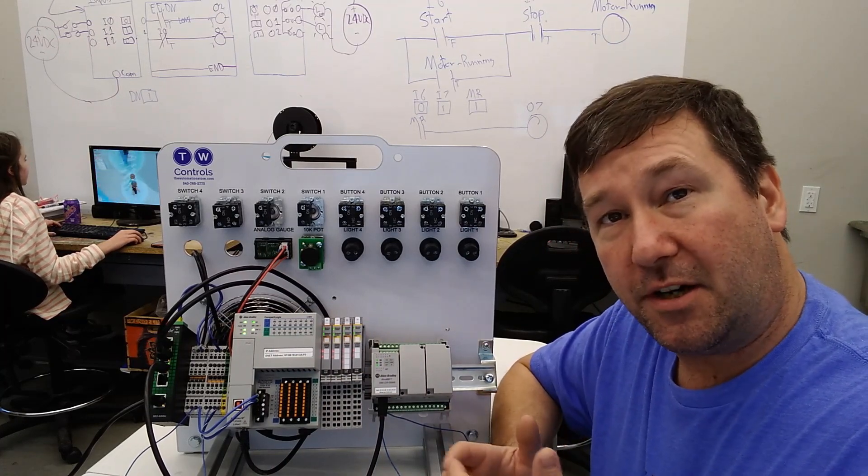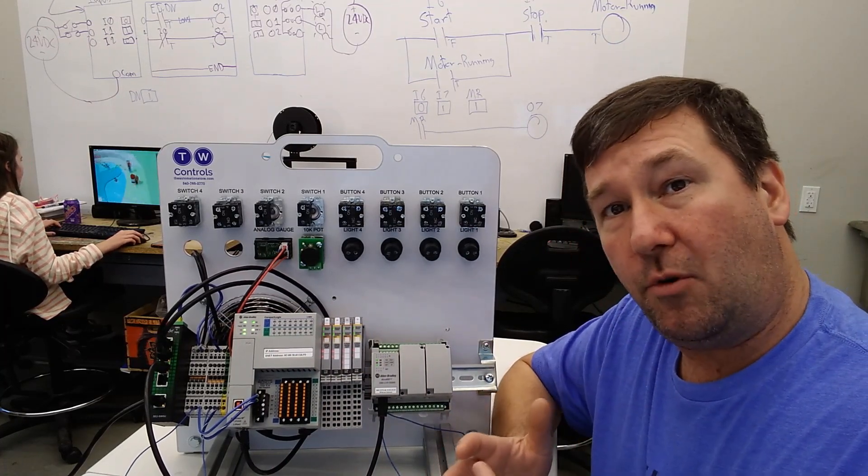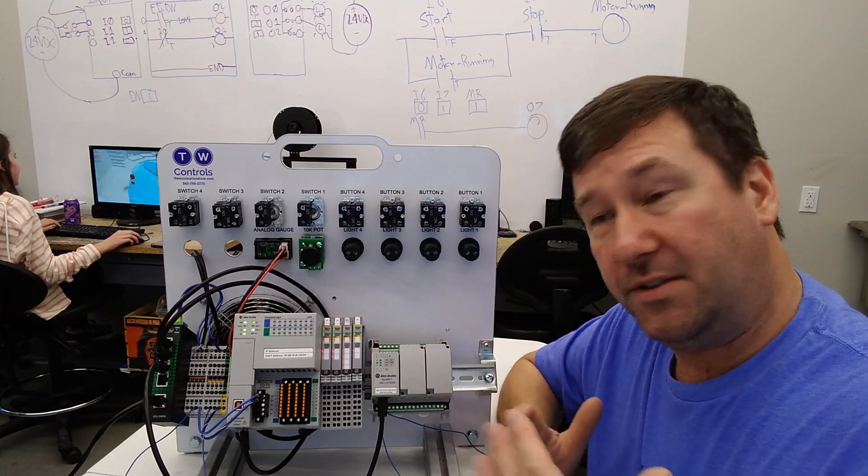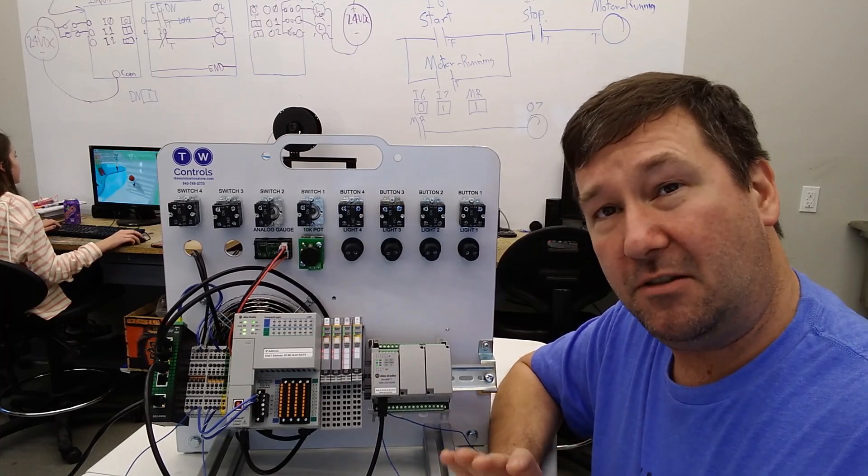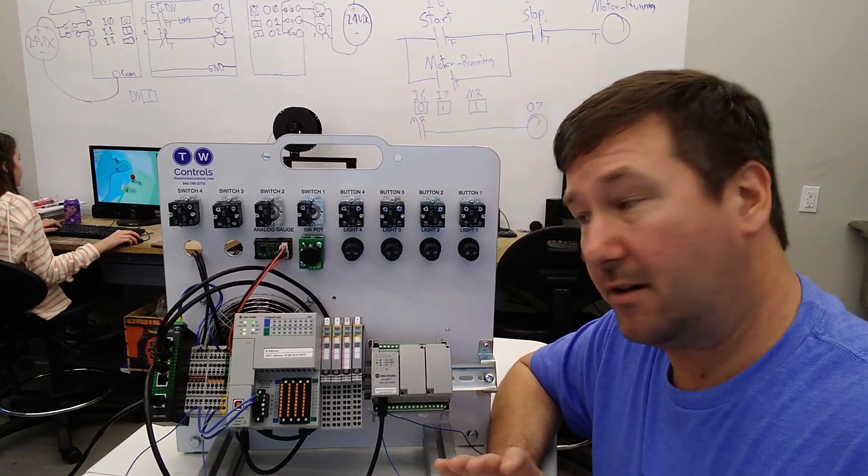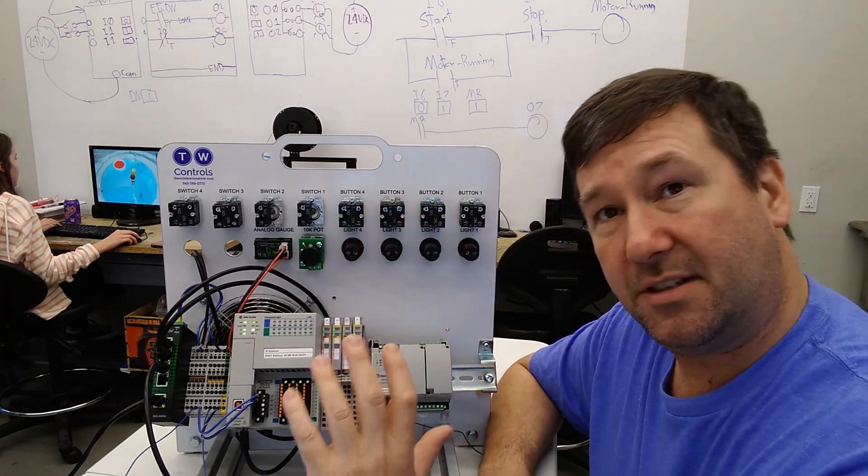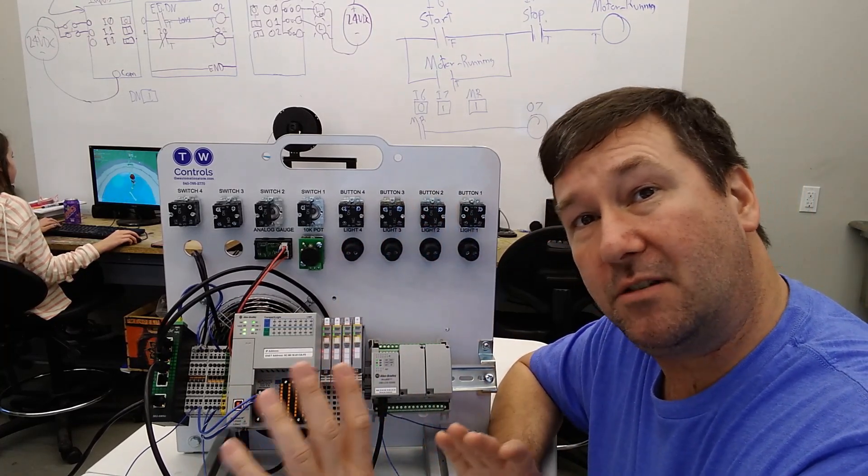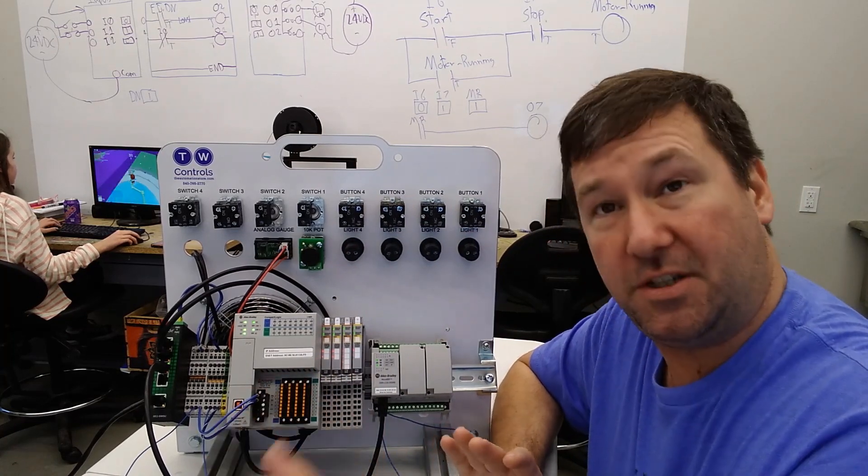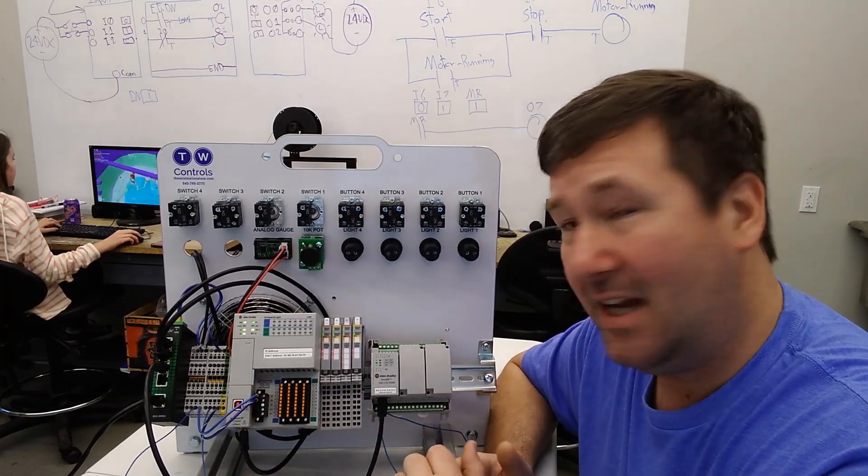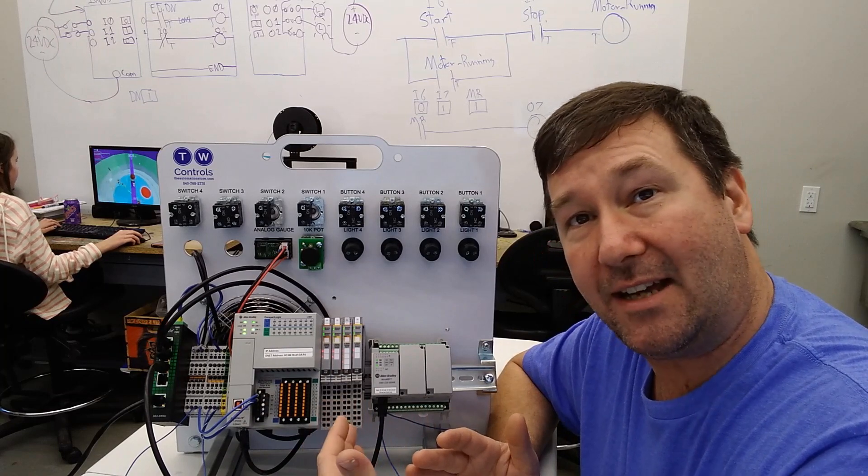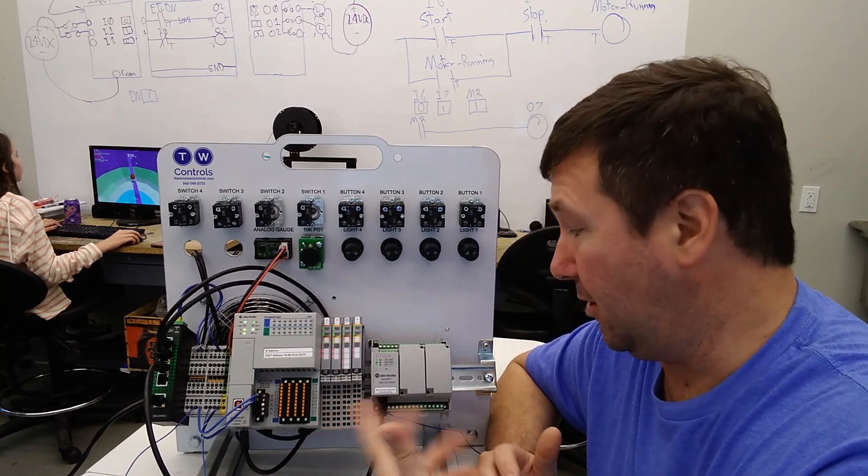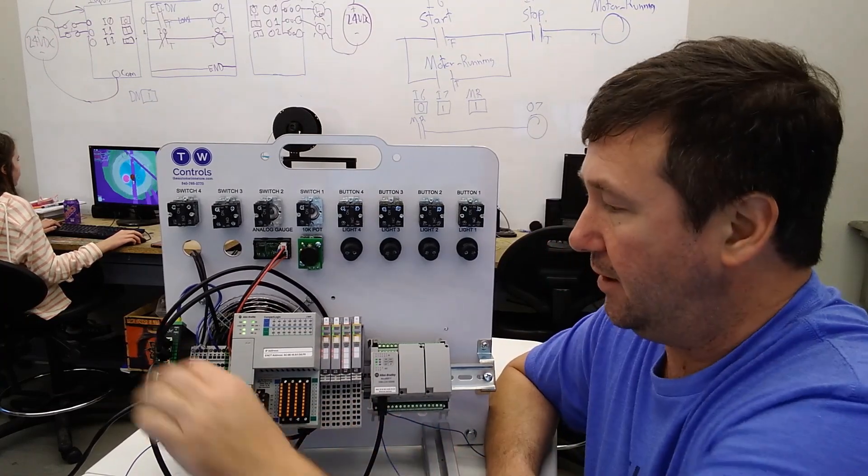In later videos, we're going to go through a more in-depth study of what do all those values mean, what can you do with the CIP generic messaging, and also how do those paths work. And probably most importantly, and I see mostly overlooked in programs, which I left out of this program as well, is how do we add diagnostics to know when we're not actually communicating?